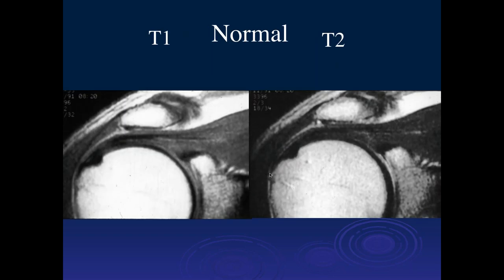We used to do T1 and T2 weighted images, but now we primarily do T2 and PD fat-sat images. Typically, the normal tendon should be black on both sequences. The musculotendinous junction should be right around the 12 o'clock position.